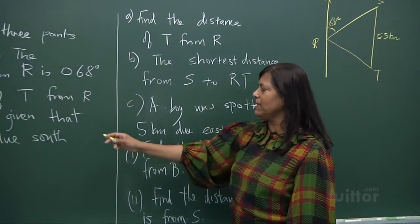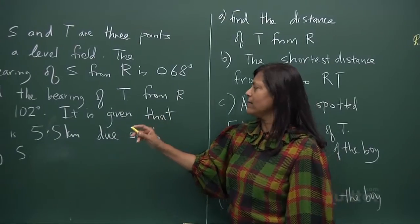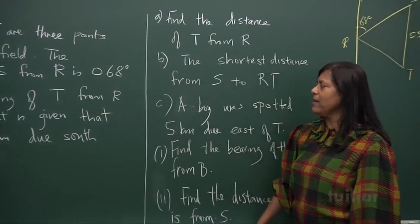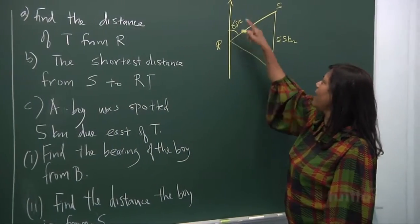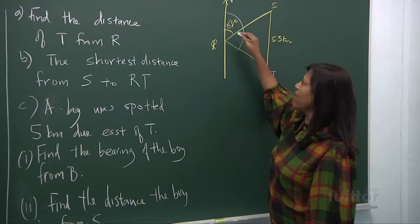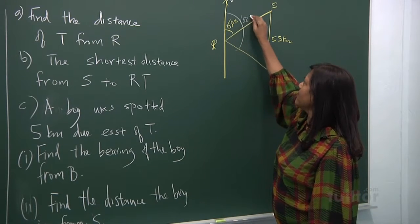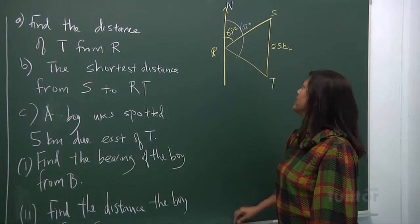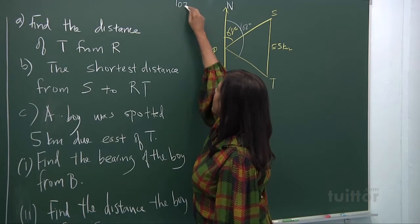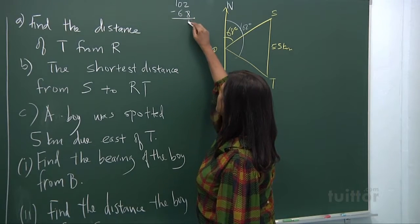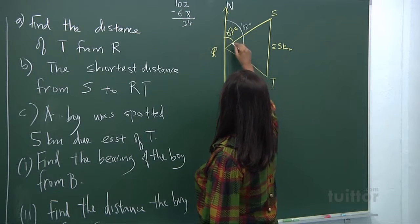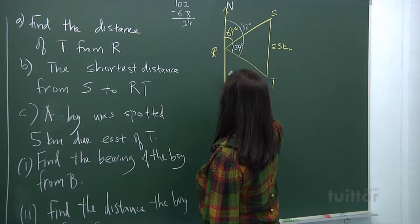And the bearing of T from R is 102 degrees. Now you look at it again, the bearing of T from R is 102 degrees. This whole angle from north, because this is north, it's 102 degrees. So what do you think this angle will be? It's 102 minus 68. When you take away, you borrow, this becomes 12, you get a 4, 10 becomes a 9, you get a 34.